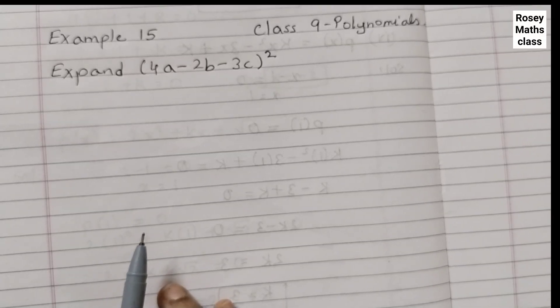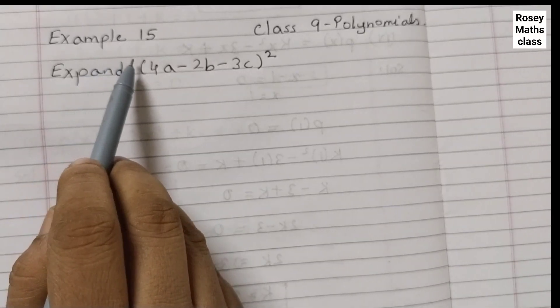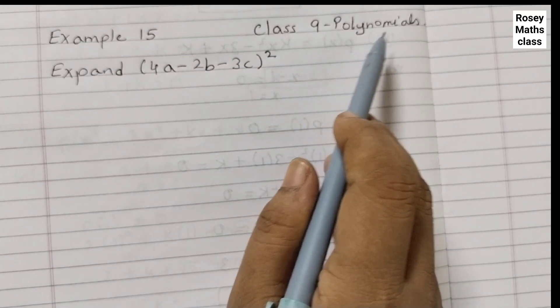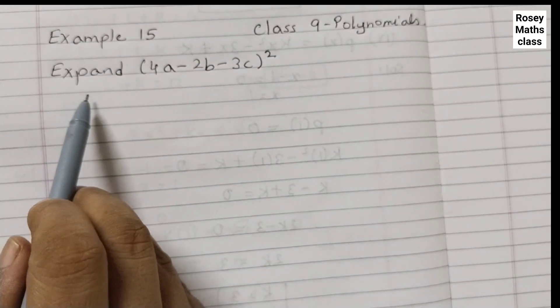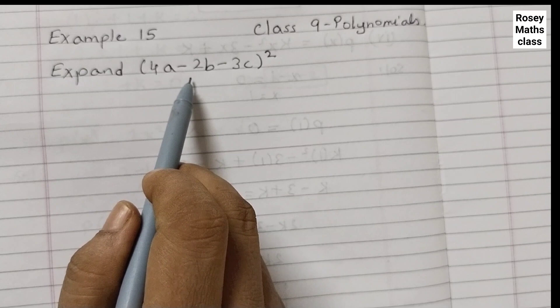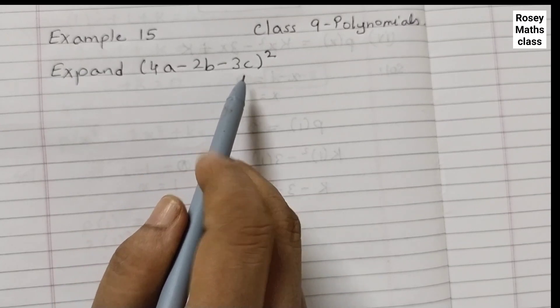Hello students, in this video we shall discuss example number 15 of class 9 chapter 2 polynomials. Expand 4a minus 2b minus 3c the whole squared.